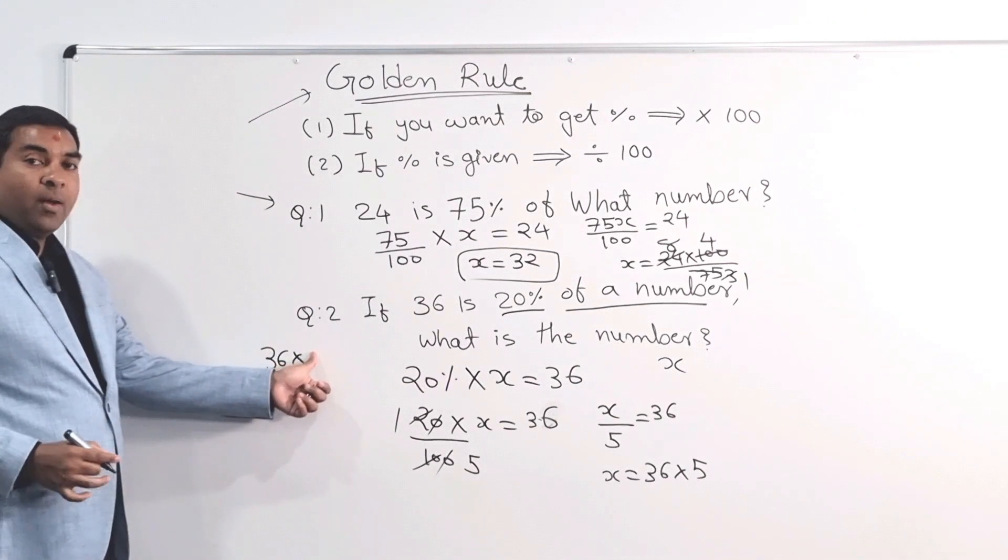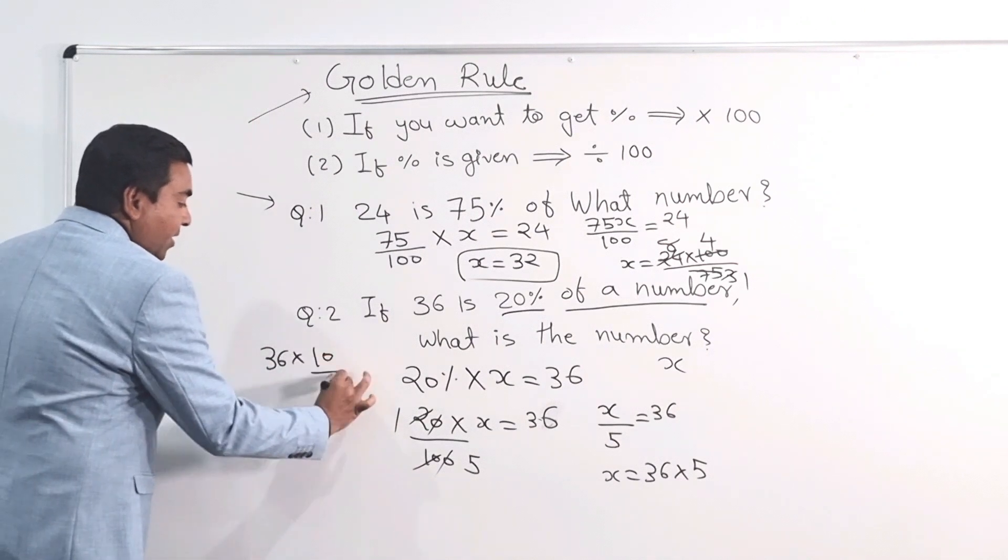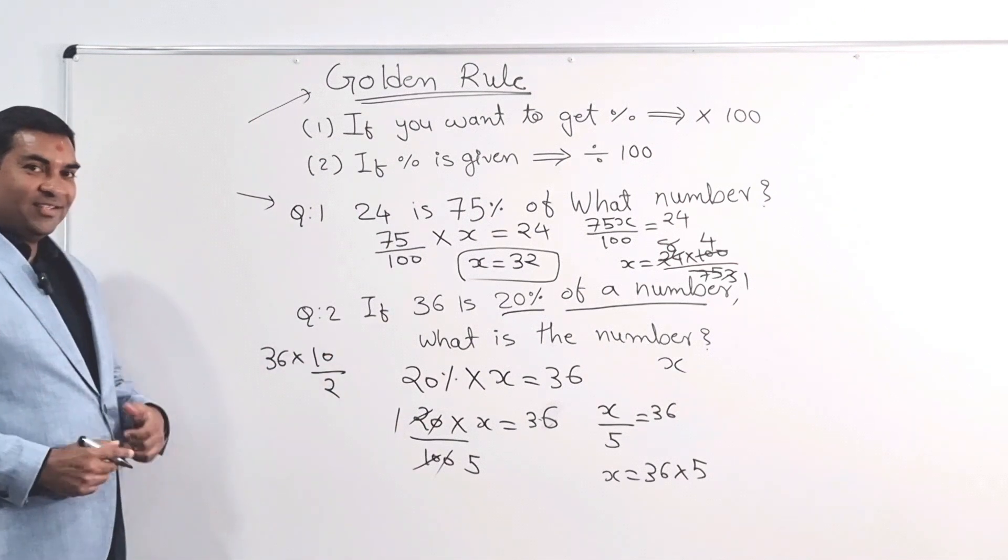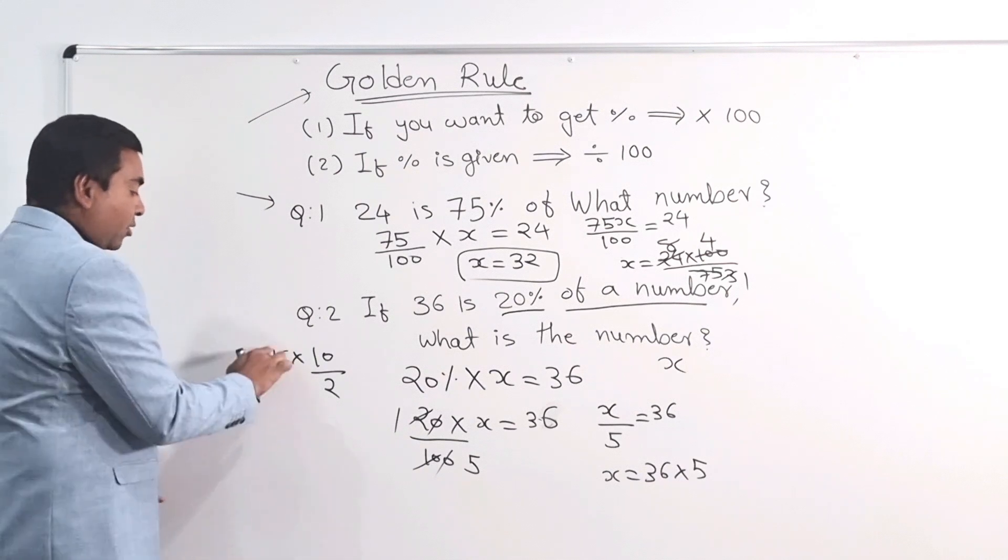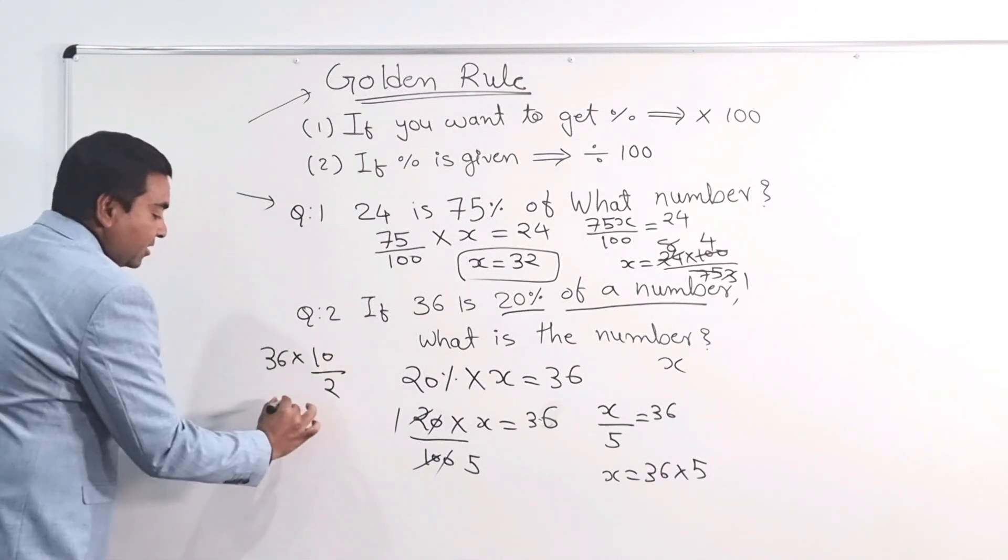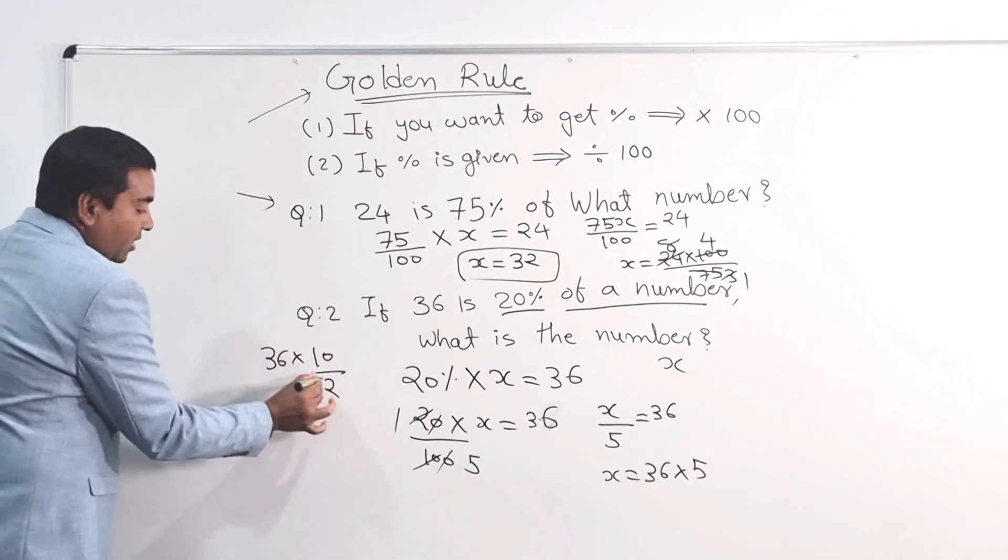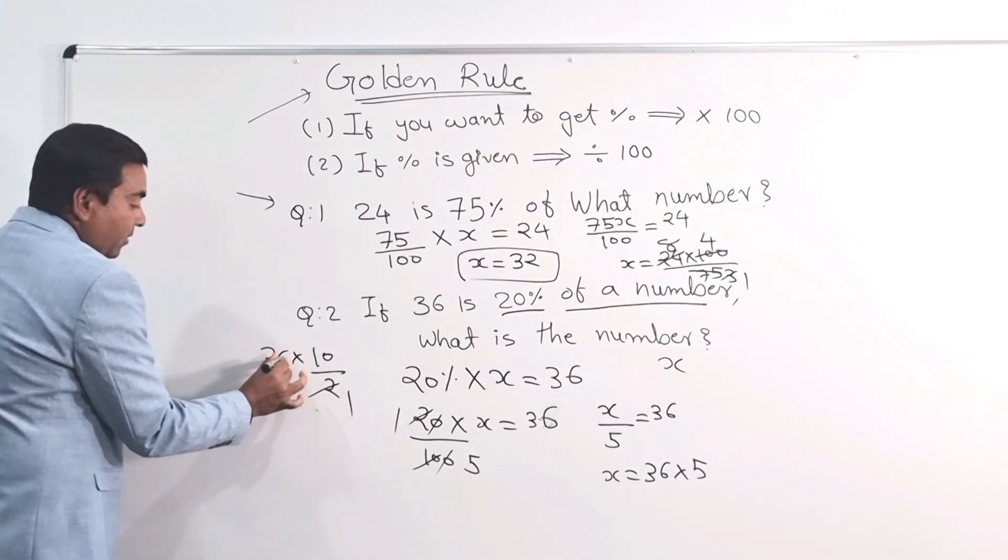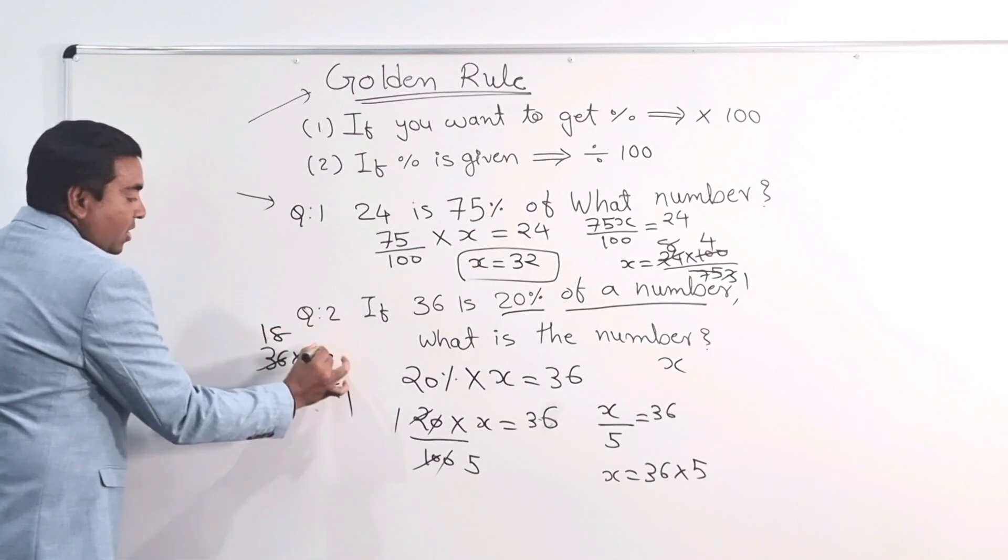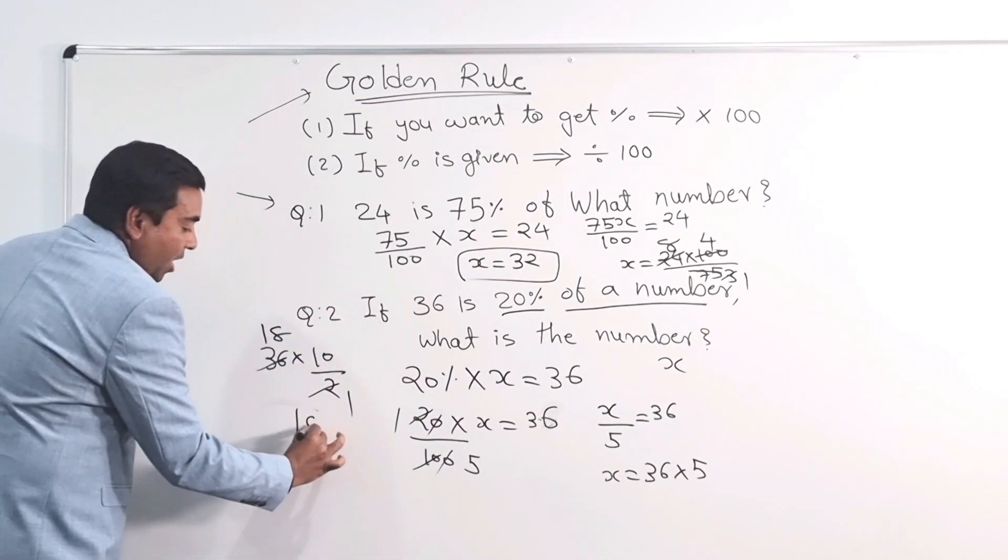36 times 5. But what is 5? Is not 5, 10 divided by 2? That is actually, is it not? Same. I can do like 36 times 10. 36 times 10 is 360. Or let's say before doing that, you can cancel it out. 2 here and 18 here. So 18 times 10 is just 180.